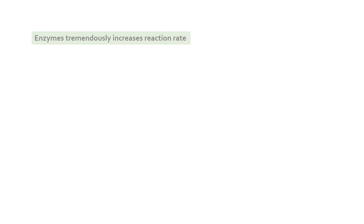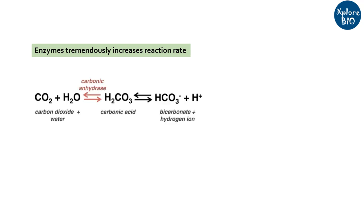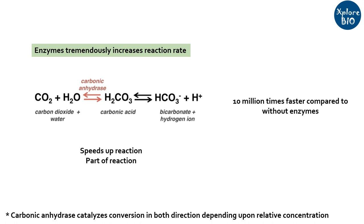Enzymes are biocatalysts that can increase the rate of a biochemical reaction up to a million times. For example, the enzyme carbonic anhydrase, present in red blood cells, speeds up the conversion of water and carbon dioxide to bicarbonate ion and hydrogen ion by about 10 million times compared to an uncatalyzed reaction. While some reactions may not occur at all without enzymes. The interesting thing about enzymes is that they speed up the reaction and are involved in it, but they themselves are not used up in the reaction.